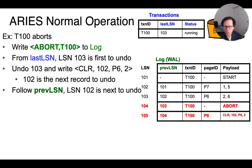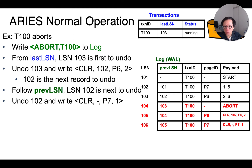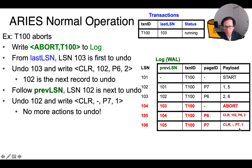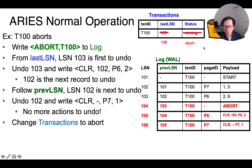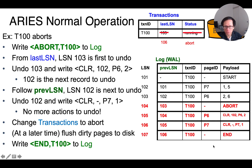We continue this process and undo log record 102, similarly writing a CLR for that action to the log. In this case, since this transaction has no other actions to undo, the CLR only states that we are writing back value 1 to page number 7. At that point, we are done with undoing. So we change the transaction status to abort. At some point later on, we will write back all the dirty data pages to the disk. Then we write the end record to the log, and we finally update the transaction status to complete.